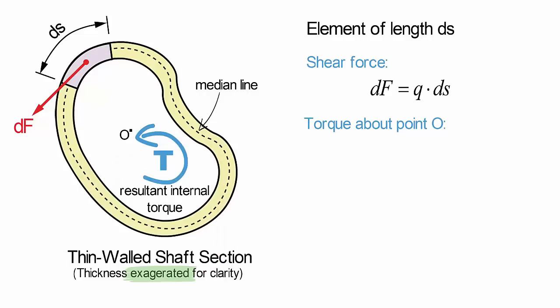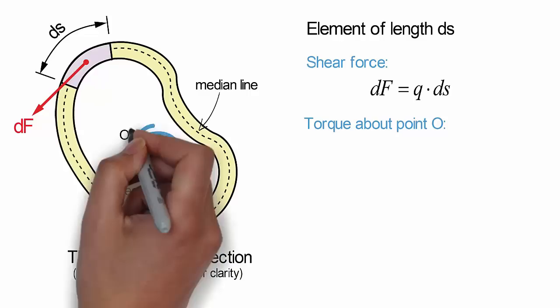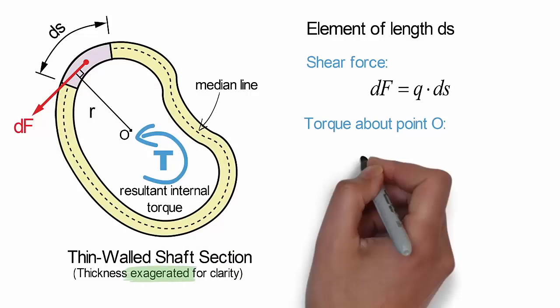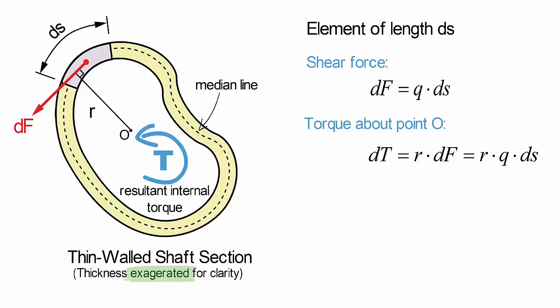To define this moment, we will define a datum point O, about which to sum all of the torsional moments acting on the cross-section. Denoting the moment arm for df about point O as r, we can express the moment due to df as dt equals r times df.